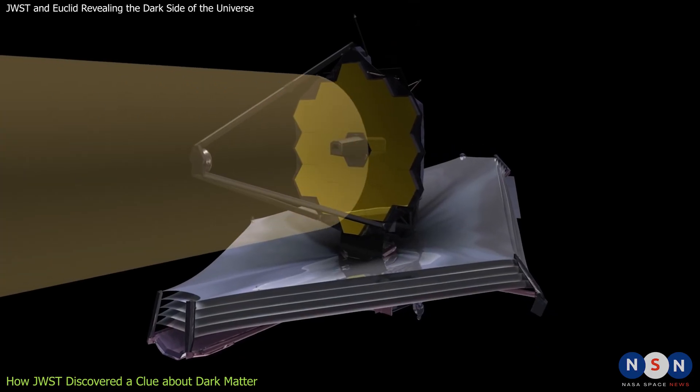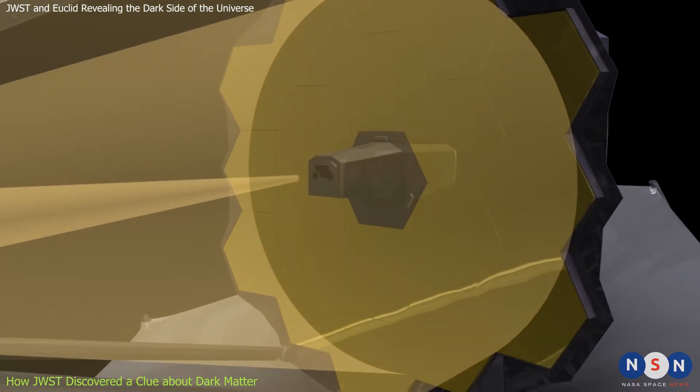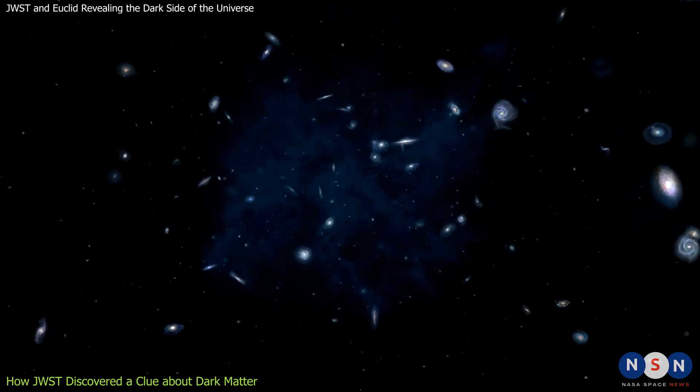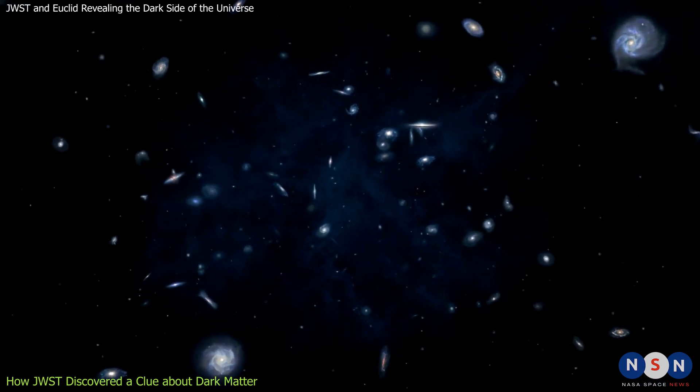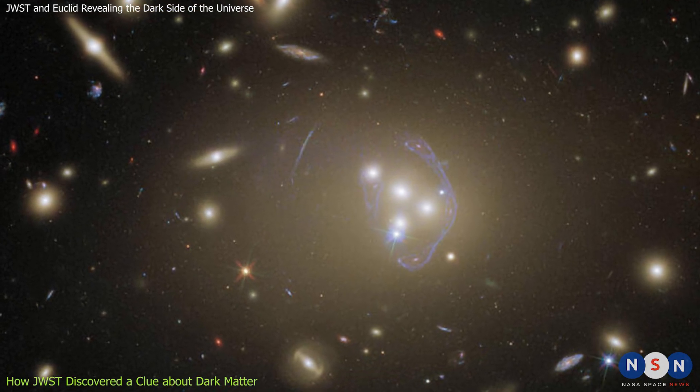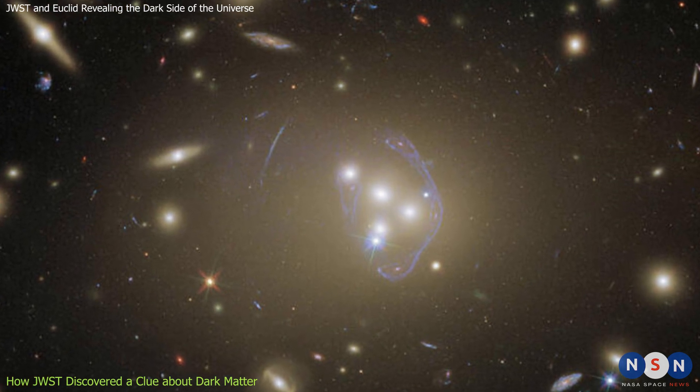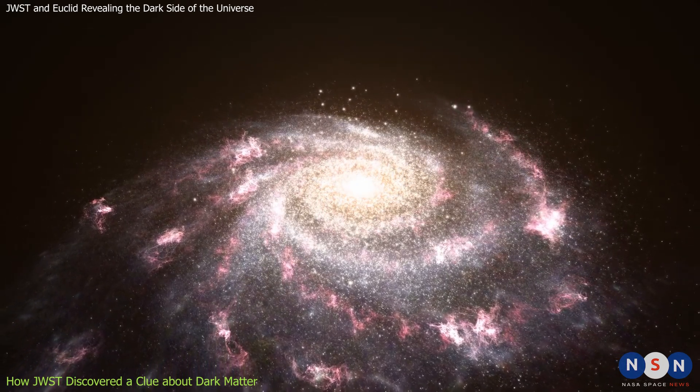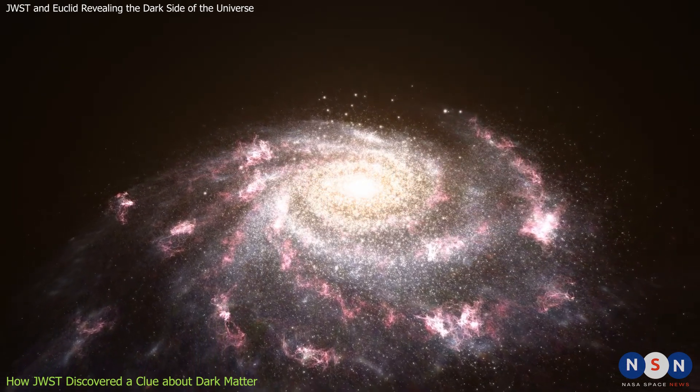By studying the images and spectra of these galaxies and their halos, James Webb was able to measure how fast they are moving relative to each other and to us. And what it found was surprising. One of the dark matter halos was lagging behind its galaxy by about 5,000 light-years. This means that there was some kind of friction or interaction between the dark matter halo and something else in the cluster.